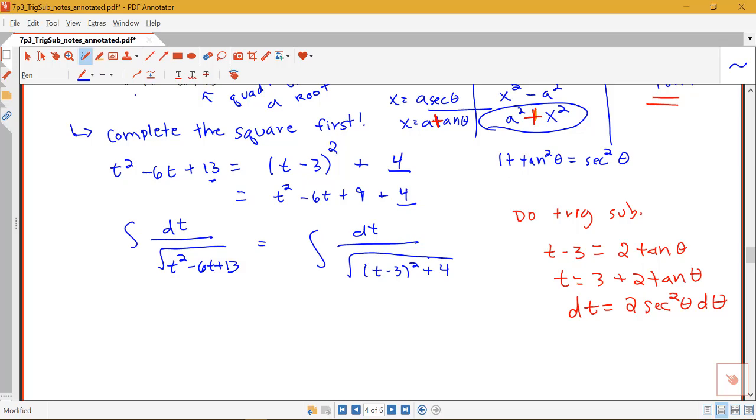So now I'm ready to rewrite my integral. I'm going to have this integral of dt, which is 2 secant squared theta d theta here. And this is all over the square root of t minus 3 squared. Well, t minus 3 is 2 tan theta. So t minus 3 squared would be 2 tan theta quantity squared, or 4 tan squared theta, and then I have plus 4 in there.